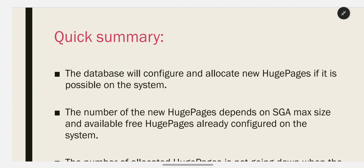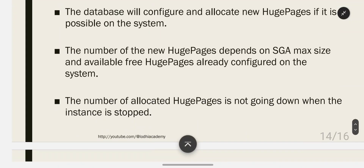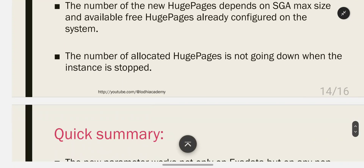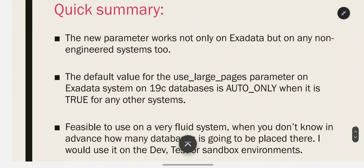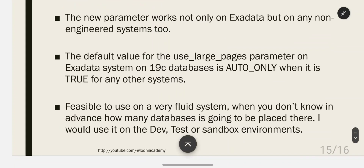In previous versions, you had to configure huge pages in the sysctl file and change values in security limits.conf. In 19c, you just set the parameter in Oracle and it handles everything. Quick summary: the database will configure and allocate new huge pages if possible on the system; the number depends on sga_max_size and already available free huge pages. The number of allocated huge pages does not decrease when the instance is stopped. This new parameter works not only on Exadata but on any non-engineered systems too. The default for use_large_pages on Exadata 19c is auto_only.